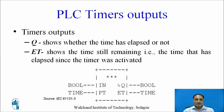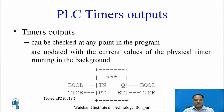There are two outputs on the timer. Q shows whether the time has elapsed or not; its data type is boolean, meaning you get either 0 or 1. The second output is ET, which stands for elapsed time — it shows the time that has elapsed since the timer was activated. Timer outputs can be checked at any point in the program and are always updated with the current values of the physical timer running in the background.